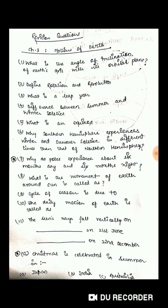Question 8: What is the movement of Earth around sun called as? Question 9: Cycle of season is due to? Question 10: The daily motion of Earth is called as? Question 11: Sun's rays fall vertically on blank on 21st June and blank on 22nd December. Question 12: Christmas is celebrated in summer in which of these countries? Japan, India or Australia?